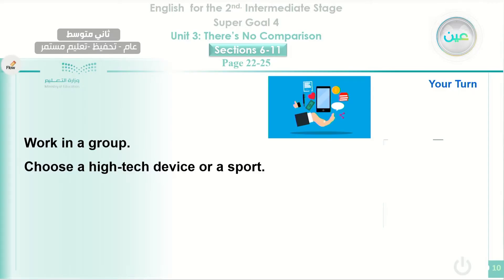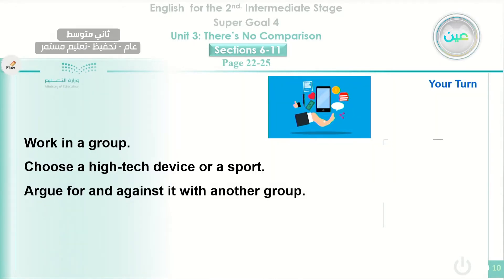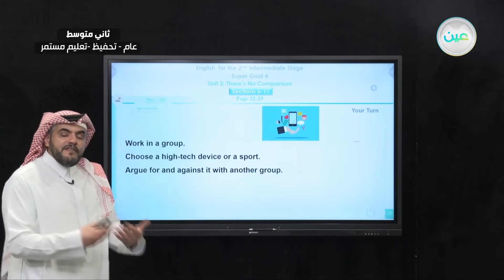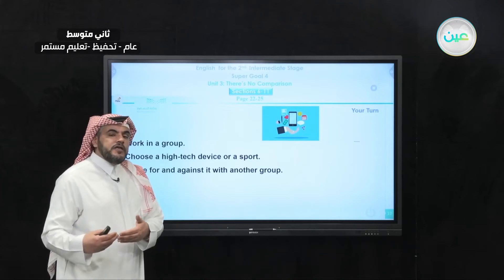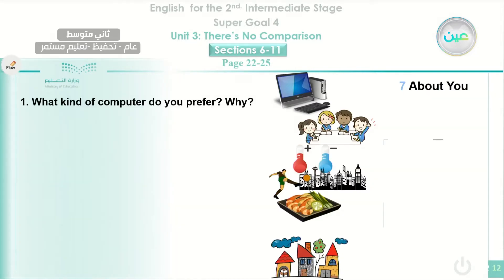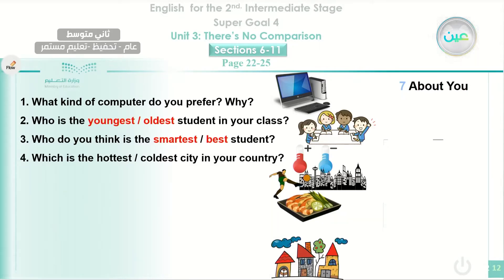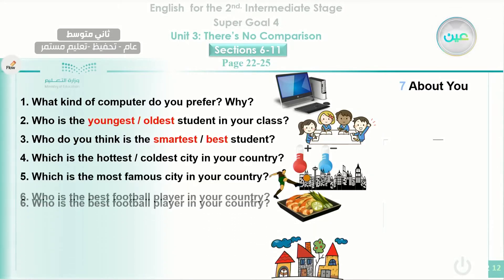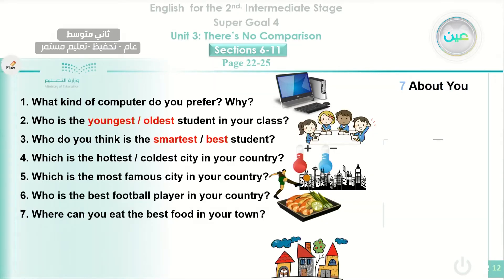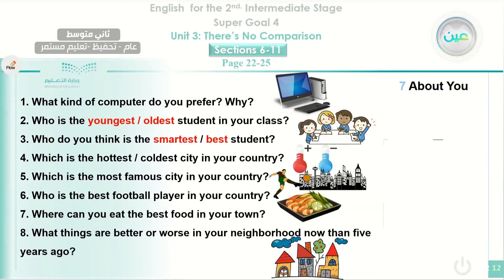Now you need to work in a group to choose a high-tech device or a sport, then argue against it with another group — say why you think this device is better than the other and give reasons and justifications. The 'About You' section asks: What kind of computer do you prefer and why? Who is the youngest or oldest student in your class? Who is the smartest? Which is the hottest or coldest city in your country? Which is the most famous city? Who is the best football player? Where can you eat the best food in your town? What things are better or worse in your neighborhood now than five years ago?